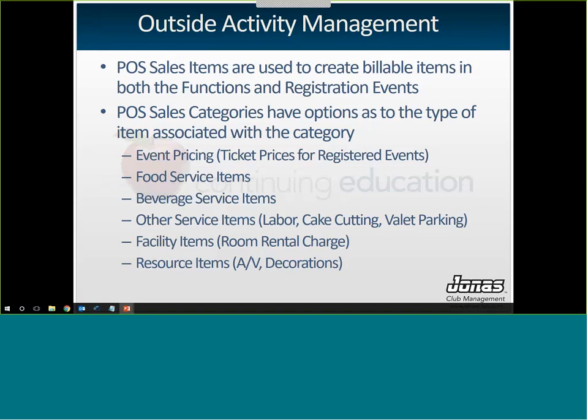Sales categories have different options, but the category actually determines where the sales item is eligible to be billed. The sales category tells you whether it's a pricing item (a ticket), food, beverage, other services, a facility, or a resource. Those categories determine what kind of item it is and what module it can be used in.